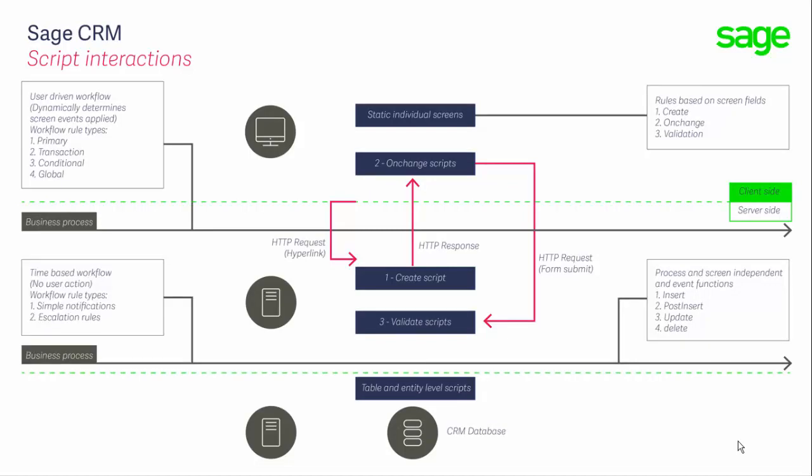All of these scripts fall into an even larger environment where we can have time-based behavior, notifications, and escalations that can also interact with the same data. These escalation rules are not written in JavaScript, but they do form part of the environment in which our JavaScript scripts work, and allow for the definition of a full set of business rules that a customer needs.